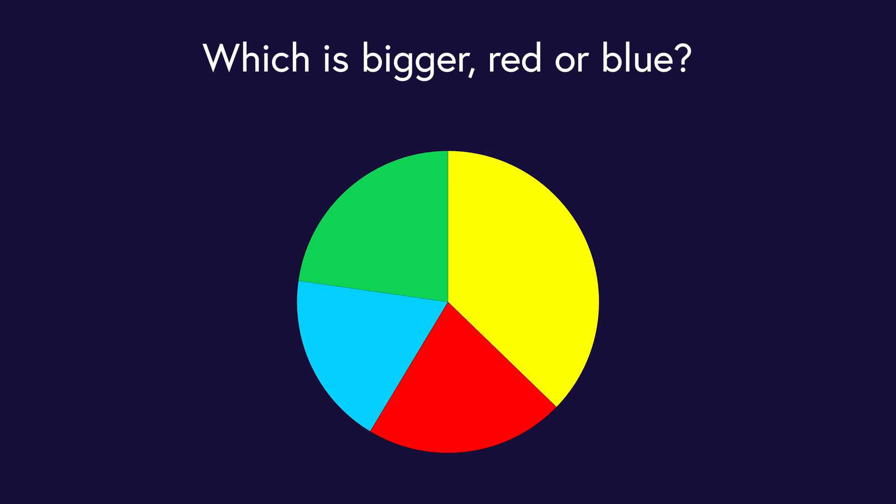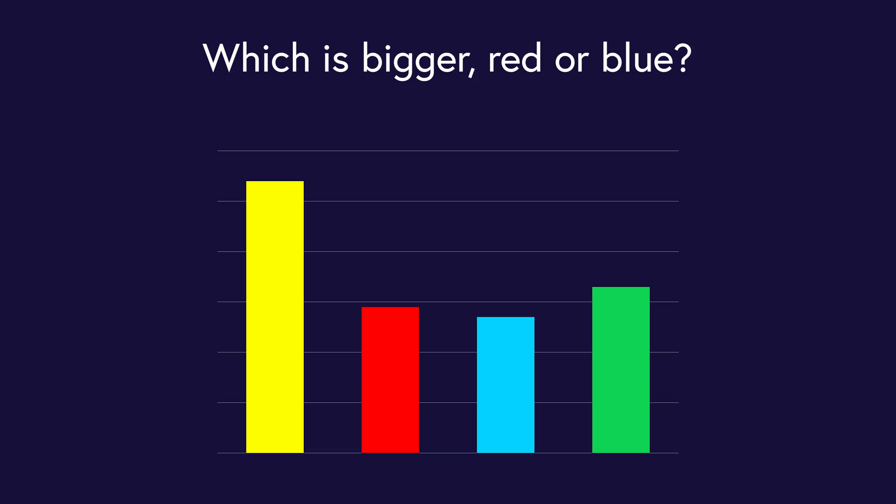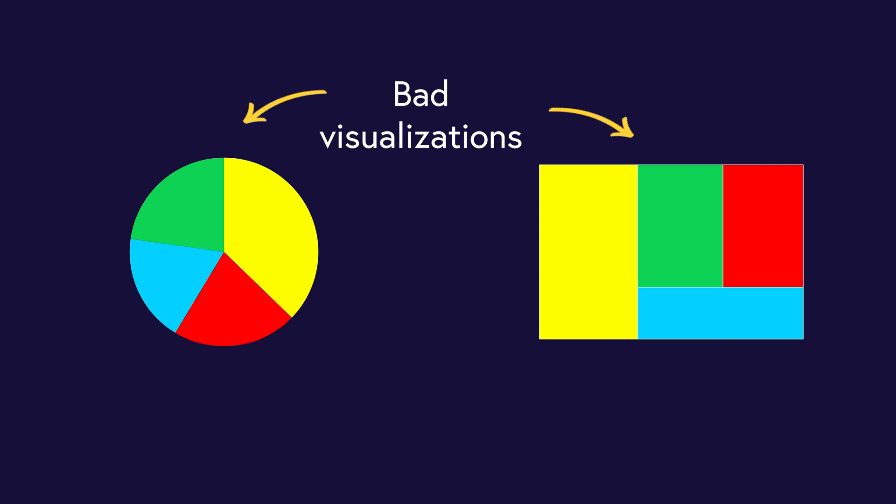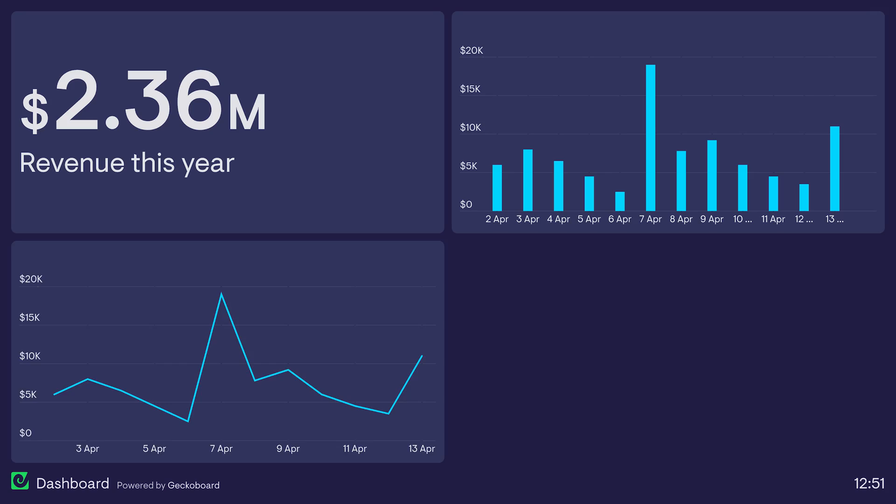Which is bigger, red or blue? When selecting a visualization, you should always choose the one which most clearly and efficiently communicates the data — it should take as little time as possible to understand what's going on. In general, we humans aren't very good at comparing and contrasting spatial area, which means that pie charts and area charts are rarely the best choice of visualization. It can be tempting to choose a different visualization just to spice things up, but just don't do it. If choosing the right visualization means choosing the same visualization, then that's fine — you're doing your job. Most of the time, you're going to be using a combination of numbers, bars, lines and tables.